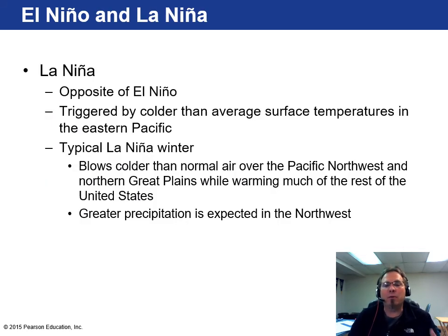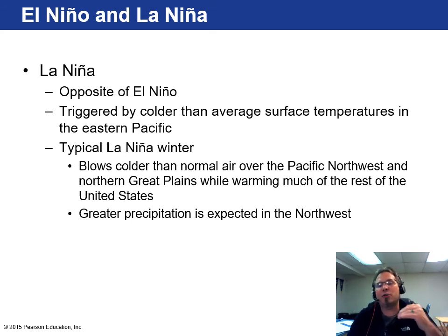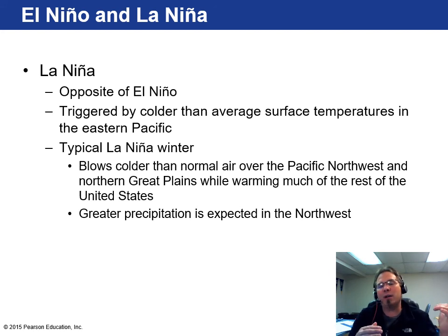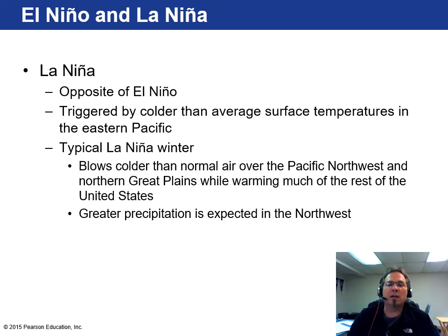La Niña is the opposite of El Niño — meaning 'little girl' — triggered by colder than average surface temperatures in the eastern Pacific. A typical La Niña winter blows colder than normal air over the Pacific Northwest and northern Great Plains while warming the rest of the United States, including Wisconsin. It presses the jet stream upward and keeps it in Canada, which means we don't get super bitter cold. However, it produces heavy precipitation in the Pacific Northwest, and pushes more moisture northward.